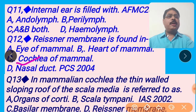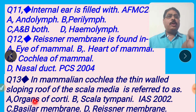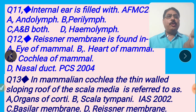Next question, question 13: In mammalian cochlea, the thin-walled sloping roof of scala media is referred to as — the roof of scala media contains a membrane called Reissner's membrane. The four options are: A, organ of Corti — this is the hearing organ; B, scala tympani — it is the chamber present below the scala media; C, basilar membrane — present at the floor of scala media; D, Reissner's membrane — present at the roof of scala media. So the right answer is option D. I shall click option D for the right answer.